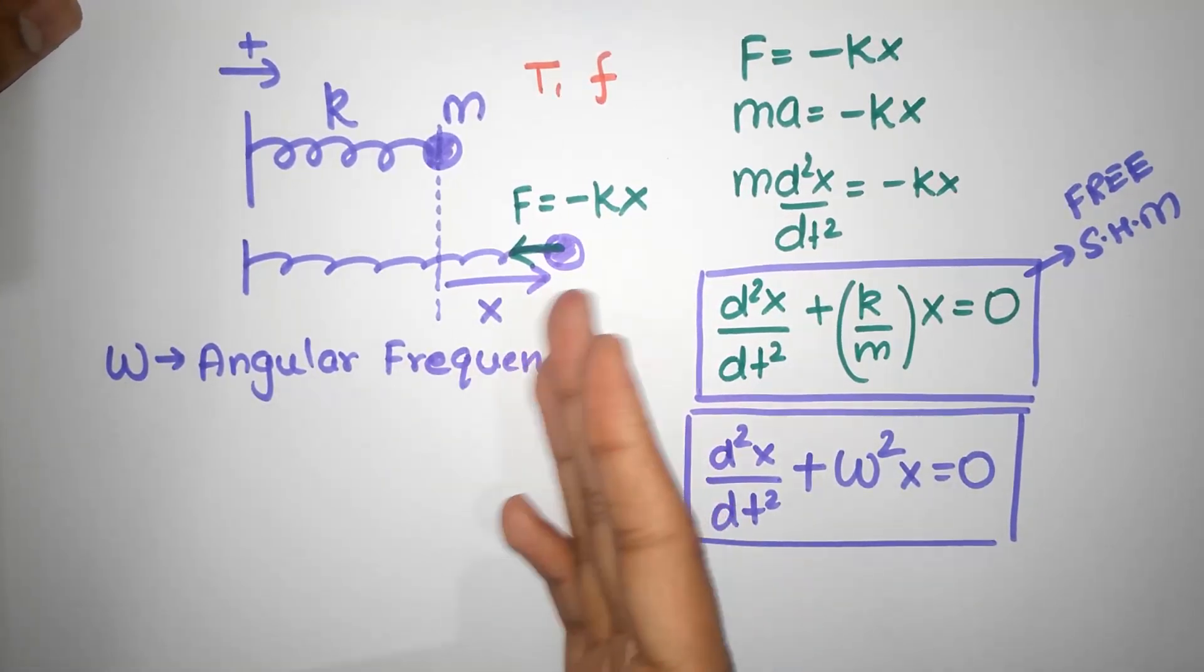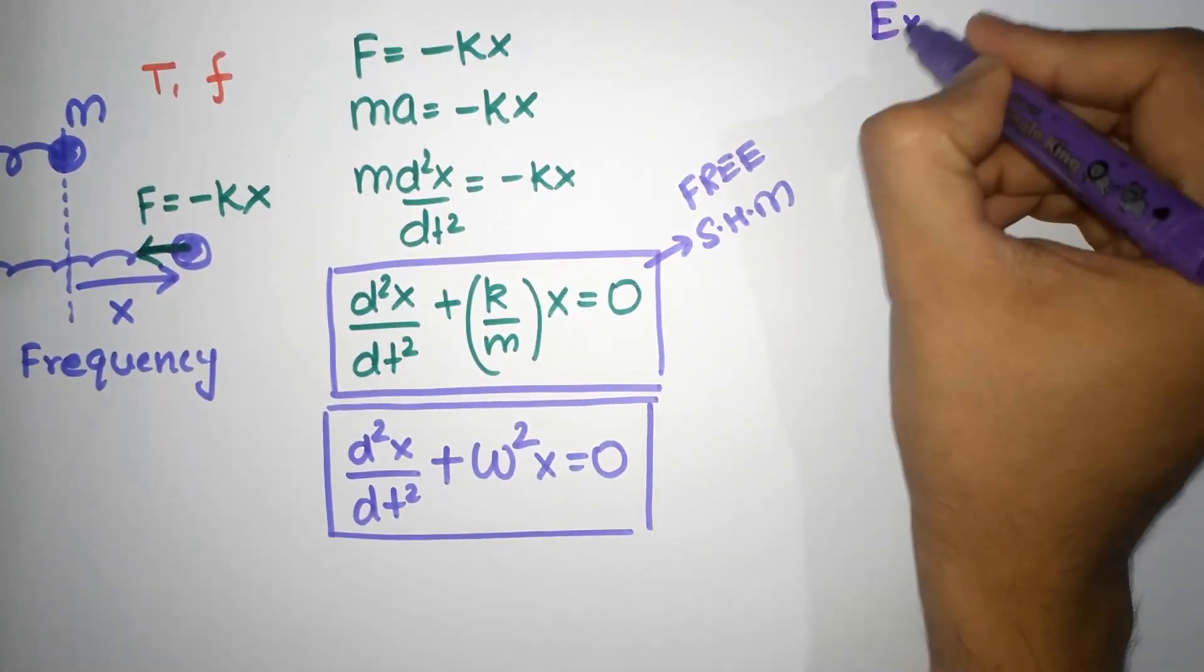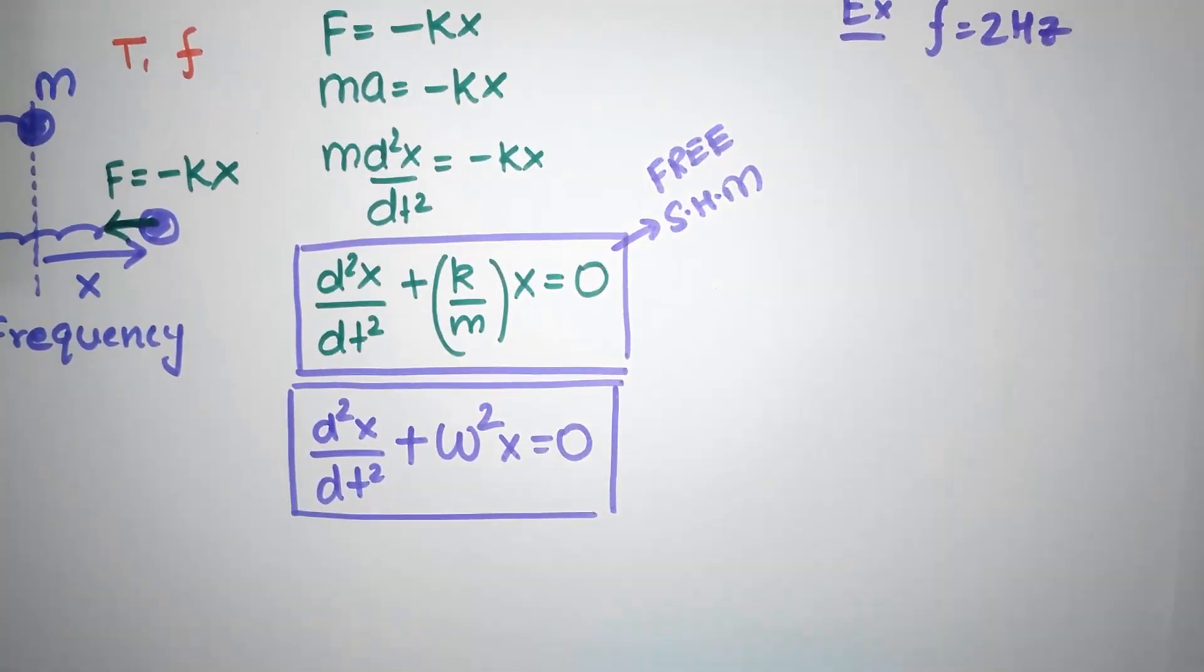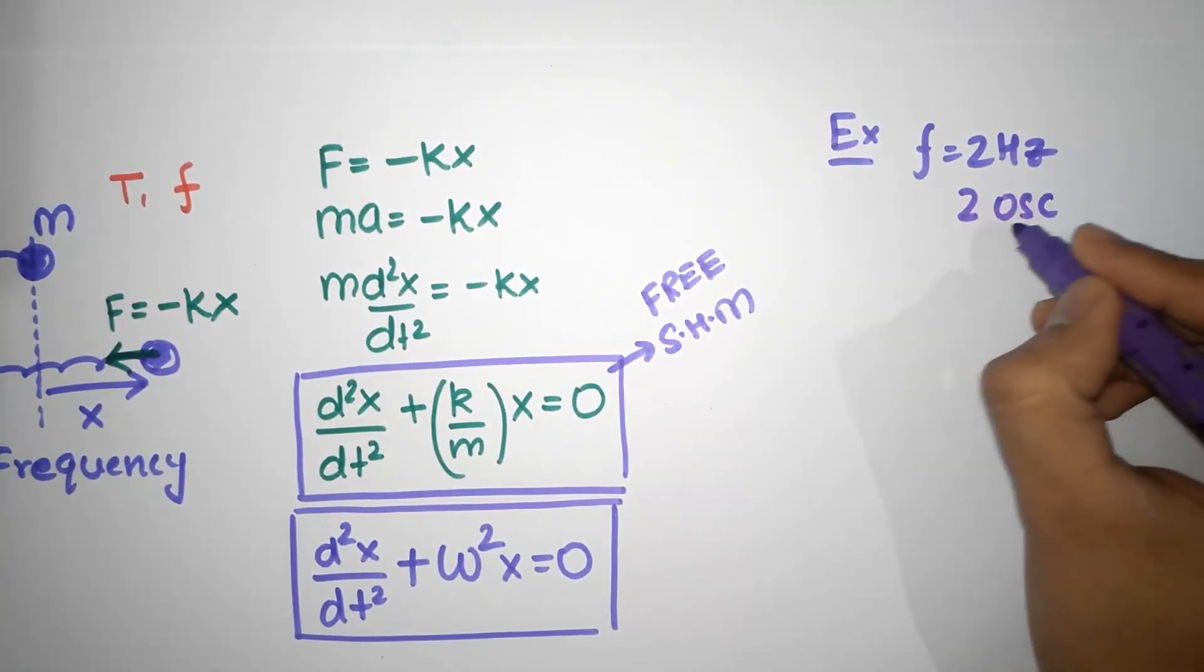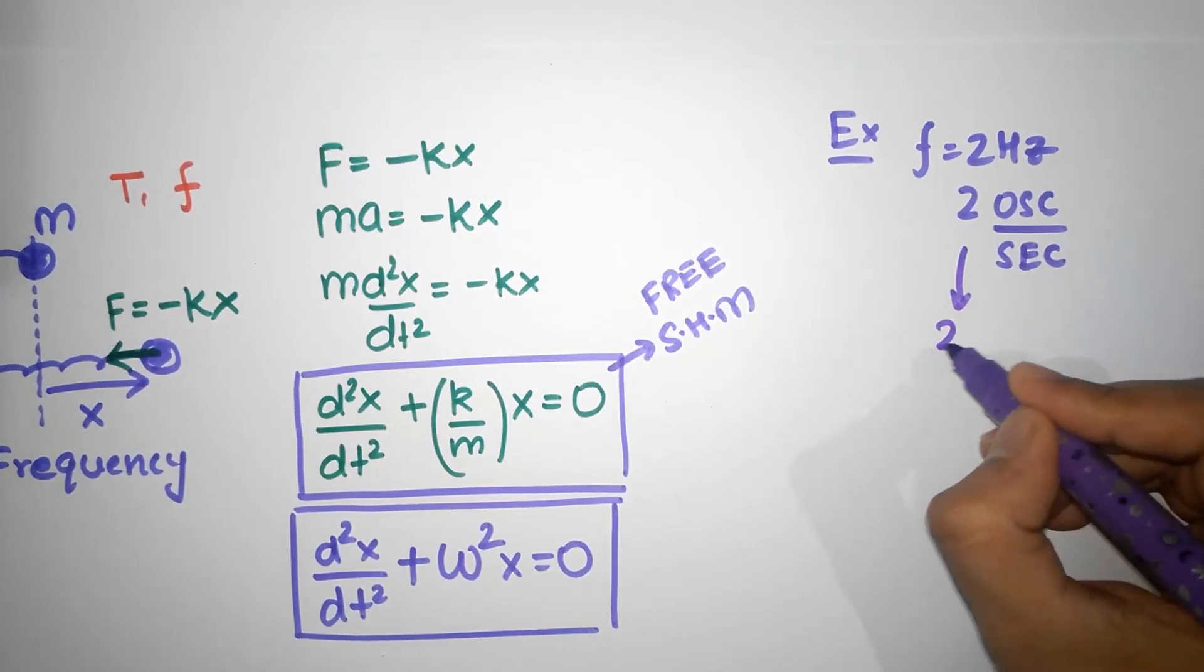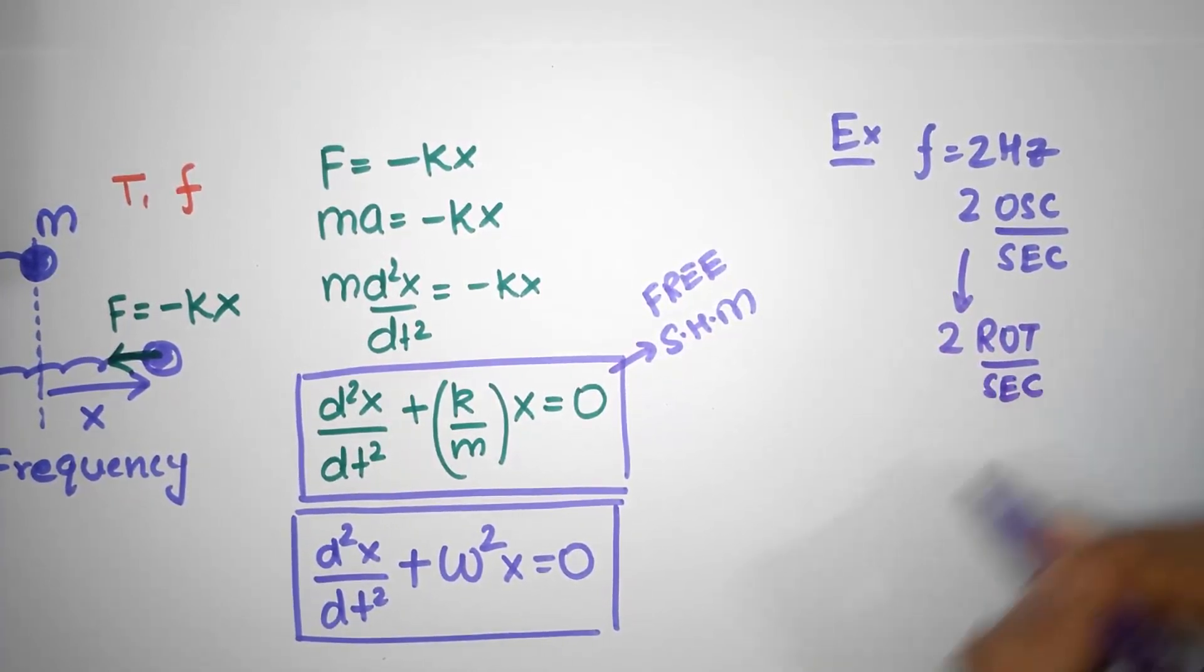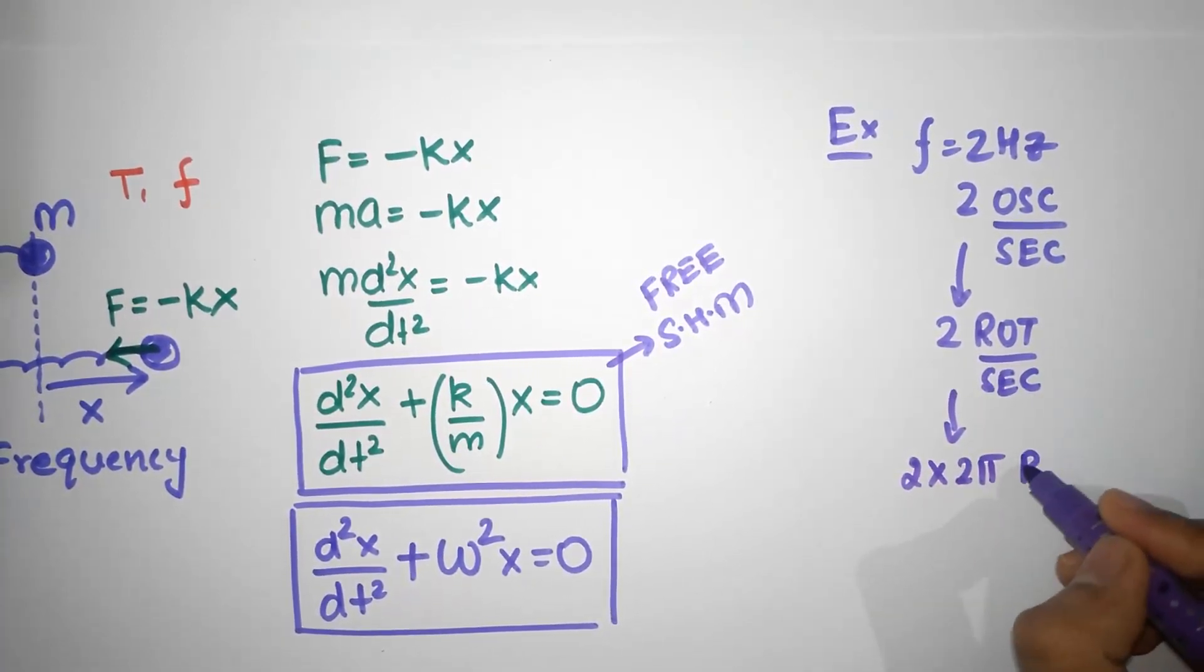So, if you have one oscillation, if you have a frequency of 2 hertz, frequency of 2 hertz, then it means two oscillations per second, right? Two oscillations per second. Now, it can be thought of as a circular motion. And so, we can say this is also the same as two rotations per second. And two rotations per second also means two times two pi radians per second.